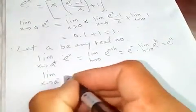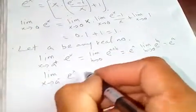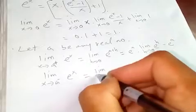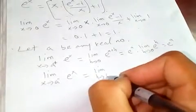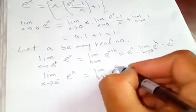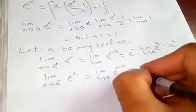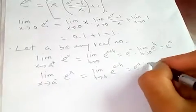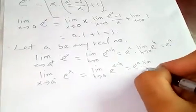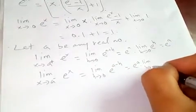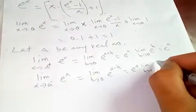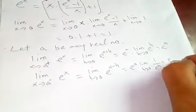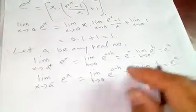Similarly, for the left-hand limit, as h tends to zero, we get e to the a minus h, which is e to the a multiplied by the limit as h tends to zero of one over e to the h, which is just e to the a.